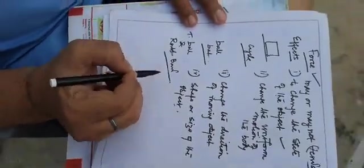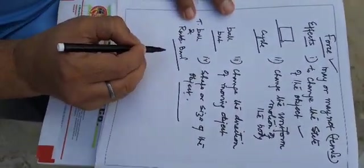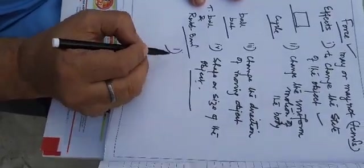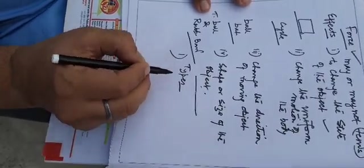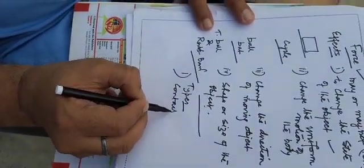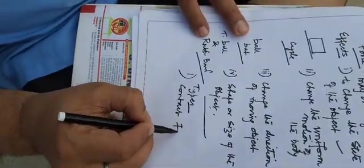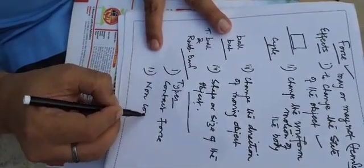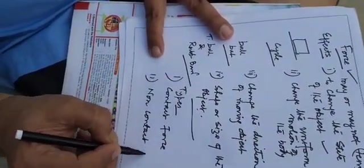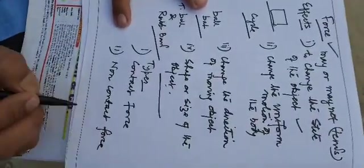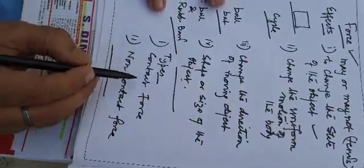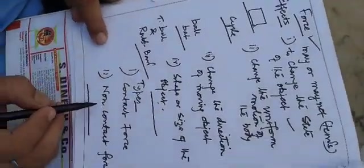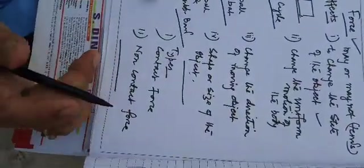Now, how many types of forces are there? Forces are of different types: number one, contact force; number two, non-contact force. From the name it is very clear — contact force is the force which acts due to contact, and non-contact force involves no contact at all.